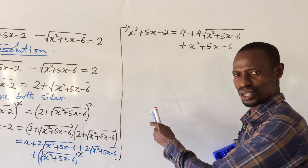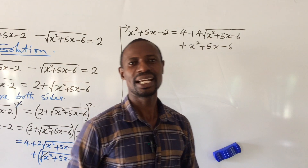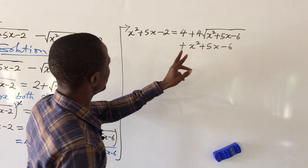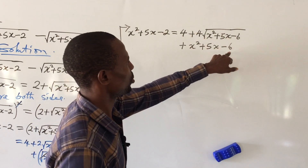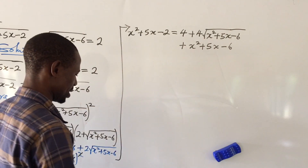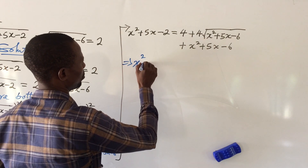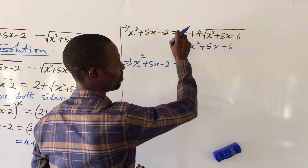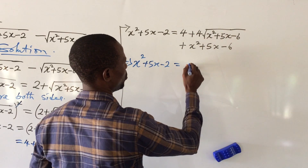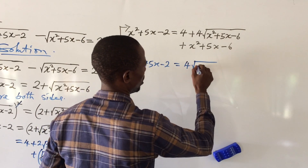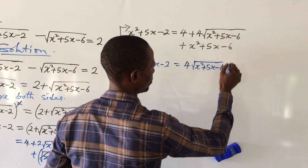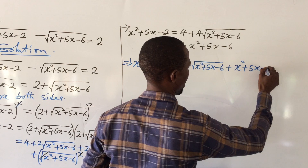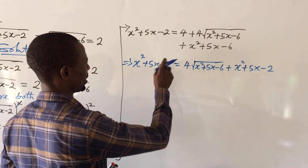As a reminder, if you've not subscribed, kindly subscribe and turn on the bell notification button. Now, looking at this critically, we have a 4 and a minus 6 on the right, so collecting those constants: 4 minus 6 gives minus 2. So the right-hand side becomes: 4 root of x squared plus 5x minus 6, plus x squared plus 5x minus 2.